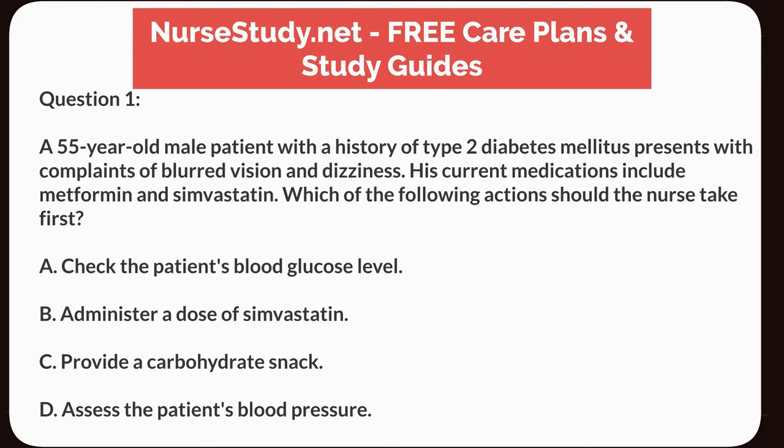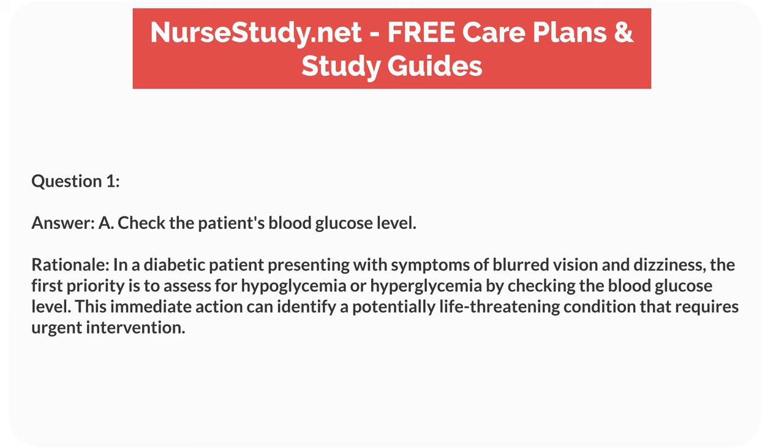Question 1. A 55-year-old male patient with a history of type 2 diabetes mellitus presents with complaints of blurred vision and dizziness. His current medications include metformin and simvastatin. Which of the following actions should the nurse take first? A. Check the patient's blood glucose level. B. Administer a dose of simvastatin. C. Provide a carbohydrate snack. D. Assess the patient's blood pressure. Answer: A. Check the patient's blood glucose level. Rationale: In a diabetic patient presenting with symptoms of blurred vision and dizziness, the first priority is to assess for hypoglycemia or hyperglycemia by checking the blood glucose level. This immediate action can identify a potentially life-threatening condition that requires urgent intervention.